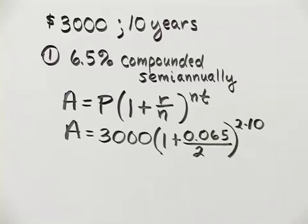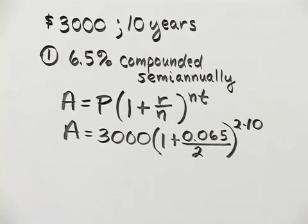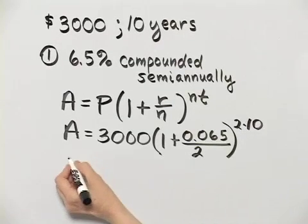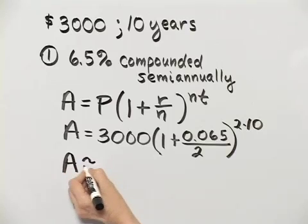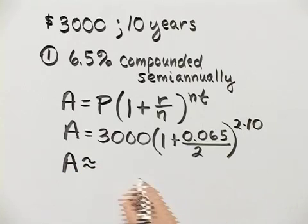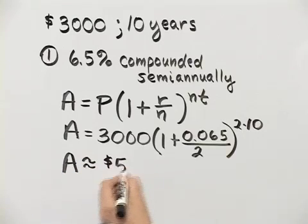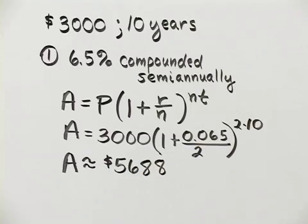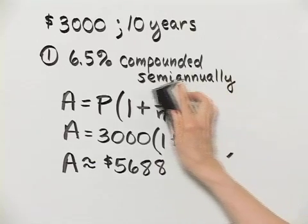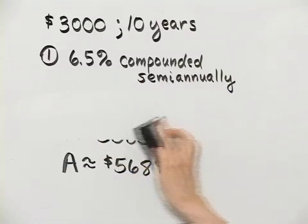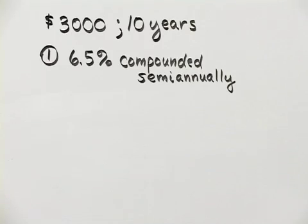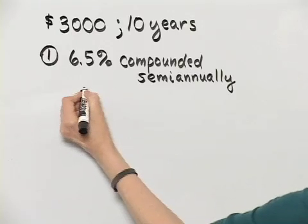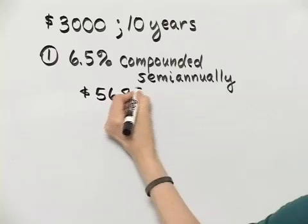I'll let you calculate that, round it to the nearest whole dollar, and the amount is approximately $5,688. So there we have for option one, $5,688. I will write that down and erase our calculation. Here: $5,688.